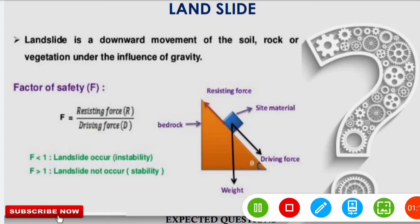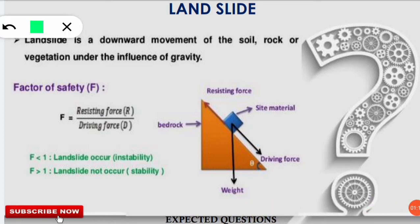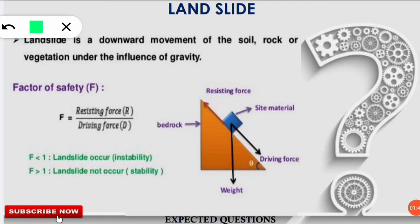The factor of safety is used to calculate landslide instability or stability. The formula is: factor of safety = resisting force divided by driving force. So it is the ratio between the resisting force and the driving force.